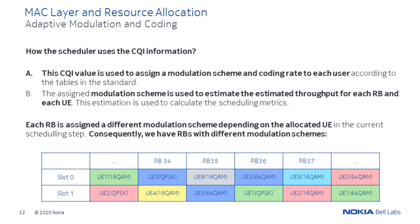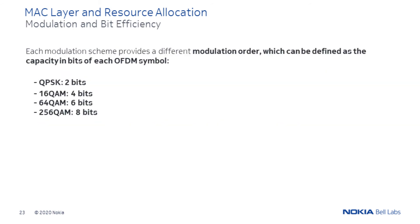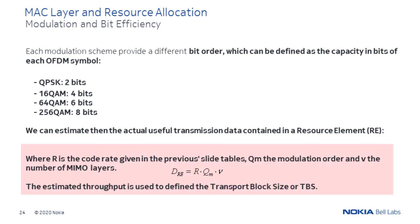Each resource block is assigned a different modulation scheme according to the allocated UE in the scheduling step. Consequently, we have resource blocks with different modulation and coding schemes. Each modulation scheme provides a different modulation order, which can be understood as the capacity in bits of each OFDM sample. With this information, the theoretical throughput per resource element can be calculated. In this estimation, the number of MIMO layers is used. With the estimated throughput, the transport block size, or TBS, is estimated — this is the actual bits of information that are transmitted to or from the allocated UE per resource block.